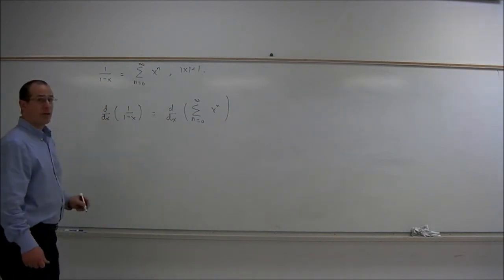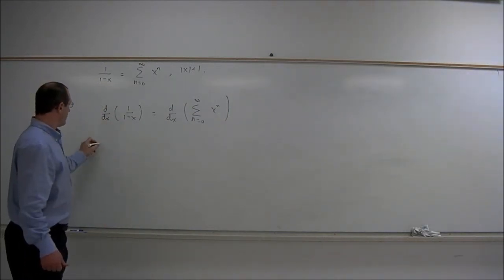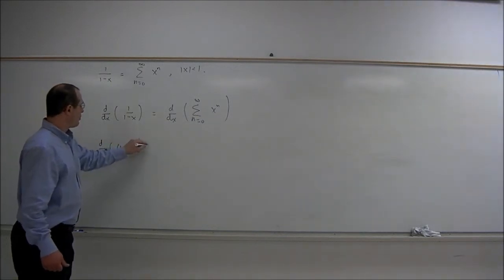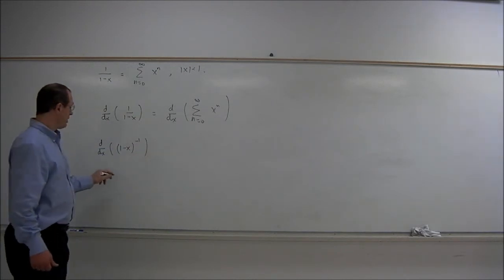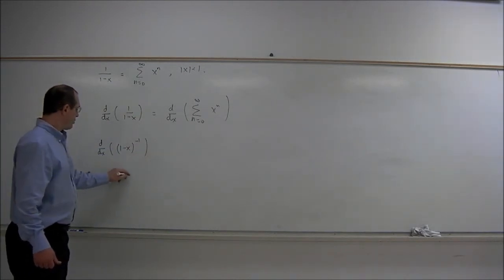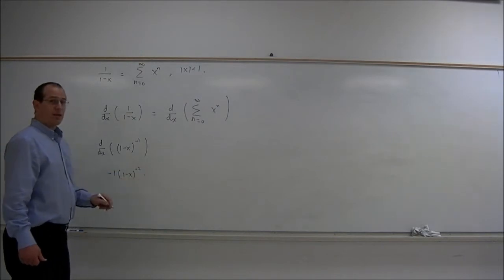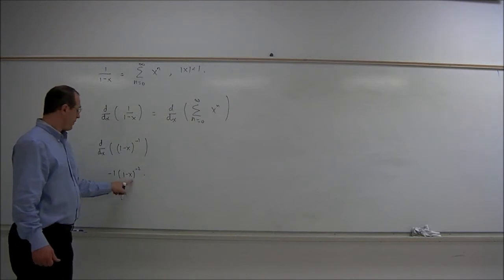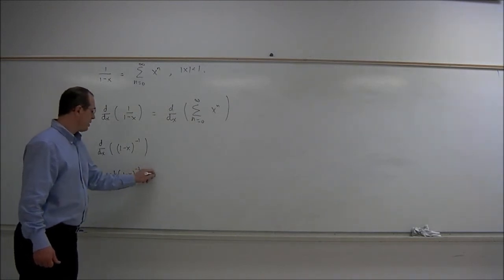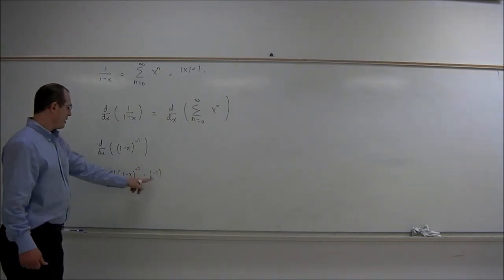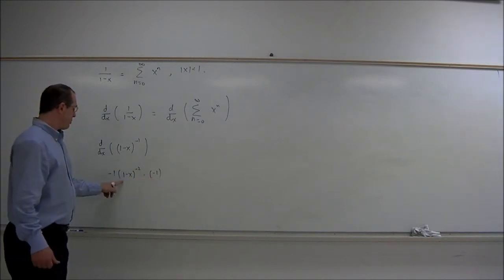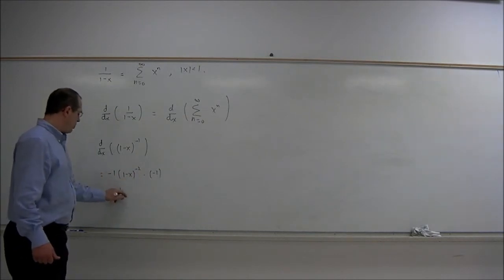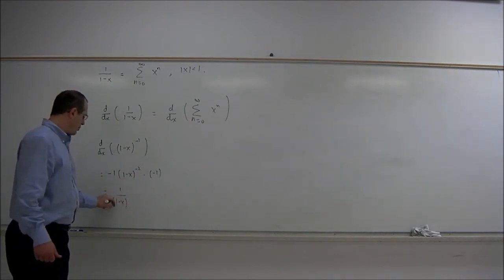The derivative of 1 over 1 minus x we can find by rewriting that as 1 minus x to the power minus 1. So the derivative is minus 1 times 1 minus x to the minus 2, using the power rule, and then times the derivative of the inside by the chain rule, and that would be another minus 1. So minus 1 times minus 1 is plus 1, and the derivative is 1 minus x to the power negative 2.